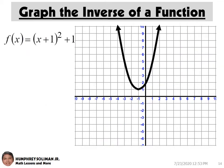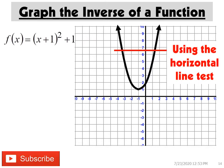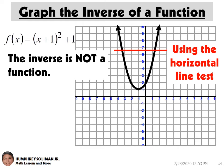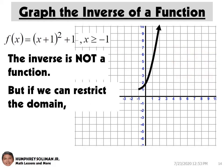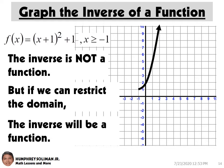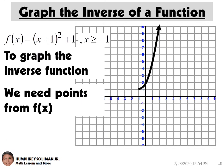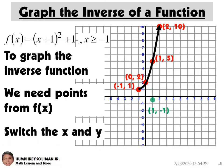Let's have another example. Here we have f(x) equals the quantity (x + 1) squared plus 1. Using the horizontal line test, it shows that the inverse will not be a function. But if we restrict the domain for the function, the inverse will be a function. To graph the inverse, we identify some ordered pairs from f(x), then switch the x and y coordinates of these ordered pairs one by one. We now have the graph of the inverse of the function.